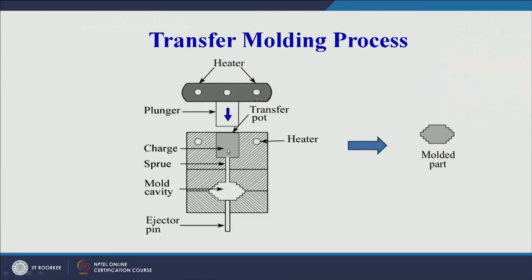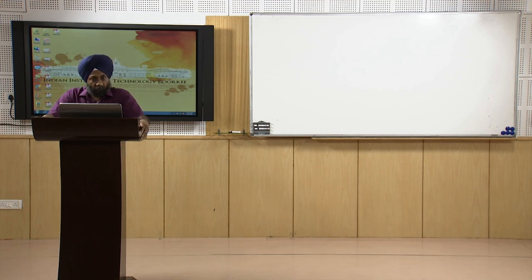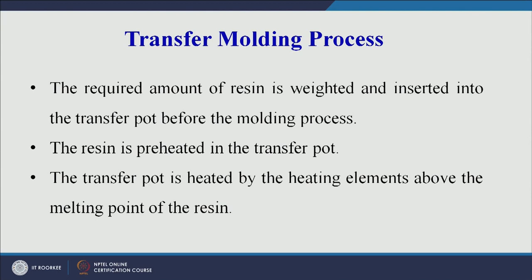Step by step: the required amount of resin is weighed and inserted into the transfer pot before molding. The resin is preheated in the transfer pot above the melting point, allowing faster flow through the sprue into the mold cavity. A plunger pushes the material from the transfer pot through the sprue into the mold cavity — no additional pressure is applied. In some cases, a piston-and-cylinder arrangement is built into the transfer pot to push the resin.